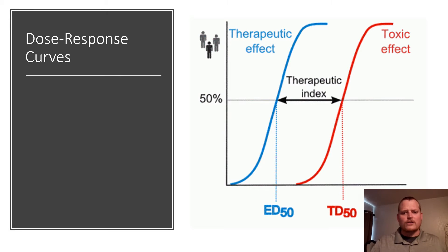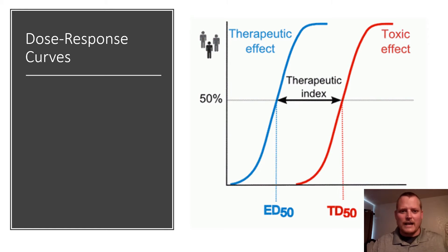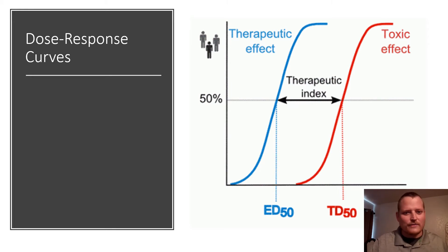Dose response curves are critically important for the study of any drug, whether drugs are used for therapeutic or intoxicating purposes. They characterize the dose needed to obtain a therapeutic or desired effect, as well as the dosage that leads to adverse reactions, ranging from minor side effects to toxic effects that can be deadly.